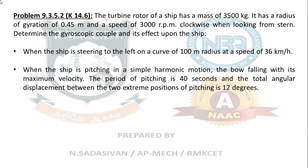The turbine rotor of a ship has a mass of 3500 kg, a radius of gyration of 0.45 meter, and a speed of 3000 rpm. The rotor spins in a clockwise direction when viewed from the stern. Mass m, radius of gyration k, and spin speed of the rotor are the key given values.